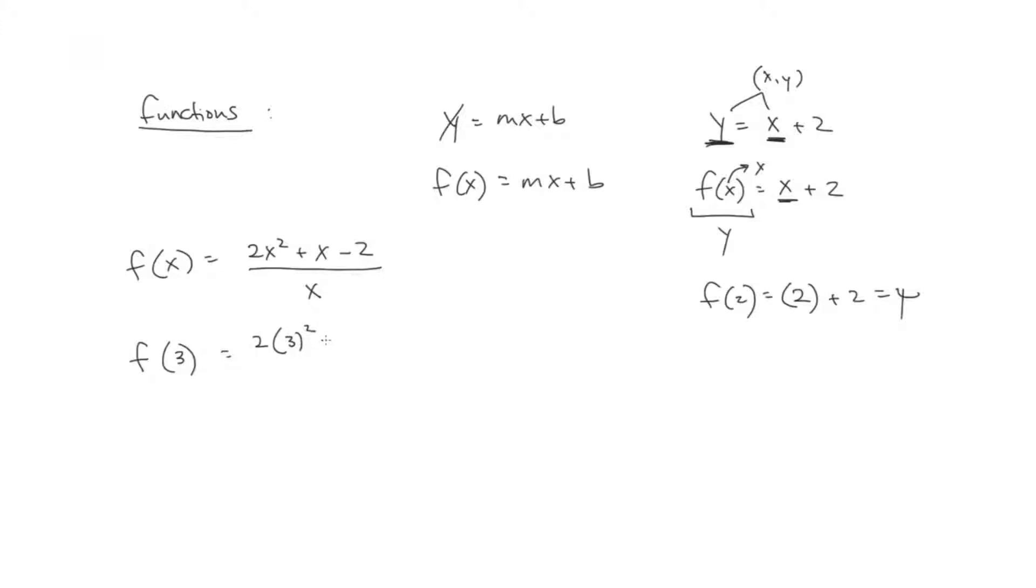So we have 2 times 3 squared plus 3 minus 2 divided by 3. So this becomes 18 plus 3 minus 2 divided by 3. That's equal to 19 divided by 3.